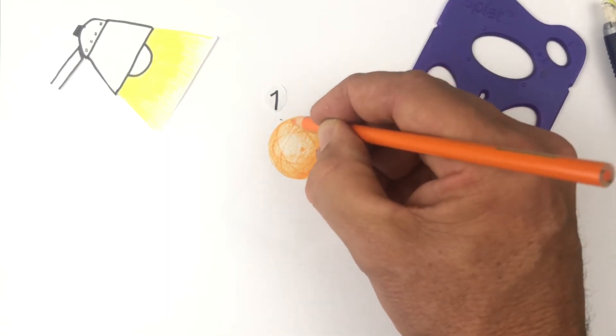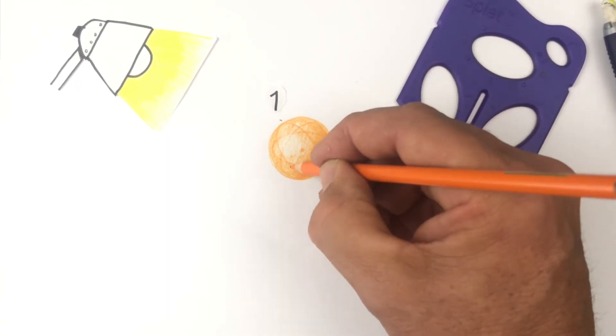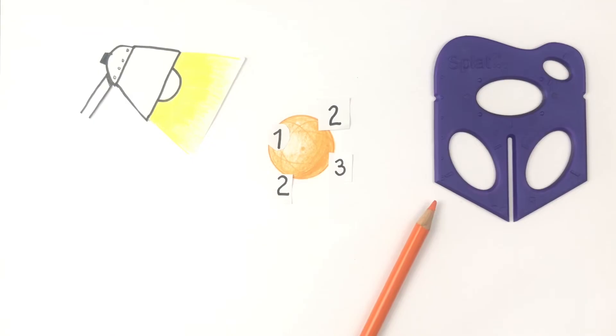Also, around the outside, add a little bit of number two value here. Now you can see that definitely looks like a pretty cool 3D sphere.